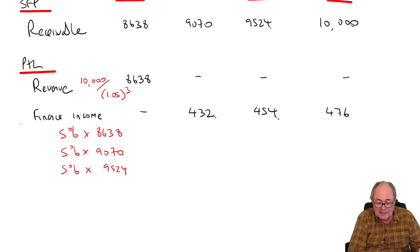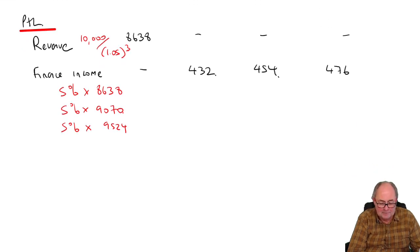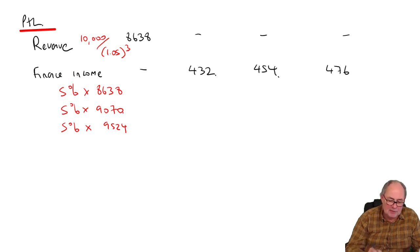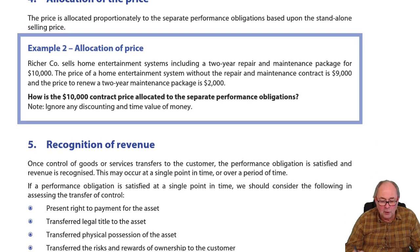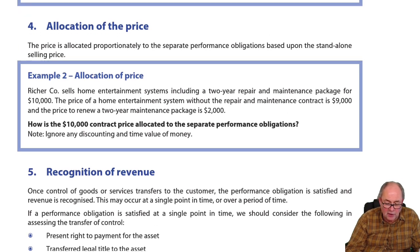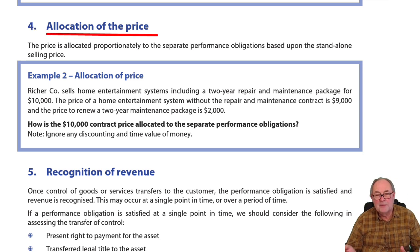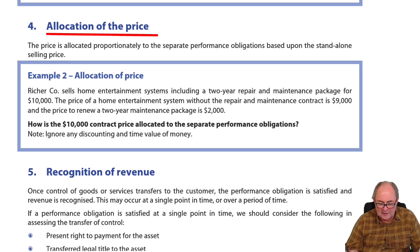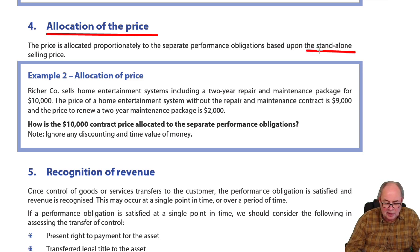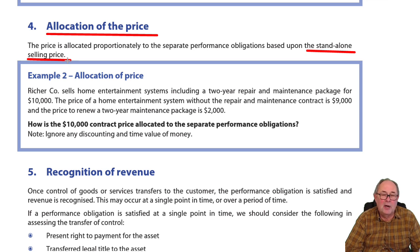Step 1: identify the contract. Step 2: identify the performance obligations. Step 3: identify the price. Step 4: if you've got a series of obligations and a single price, we now need to allocate the price to the obligations. If given no other information, use the standalone selling price of each of the products being offered. Pause the recording and read example two.